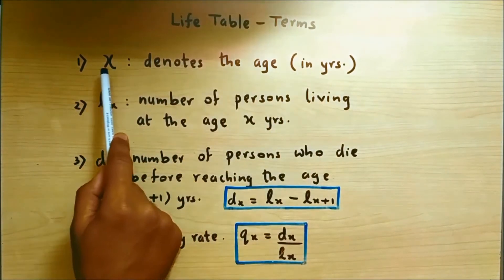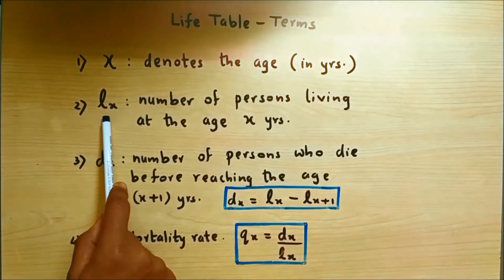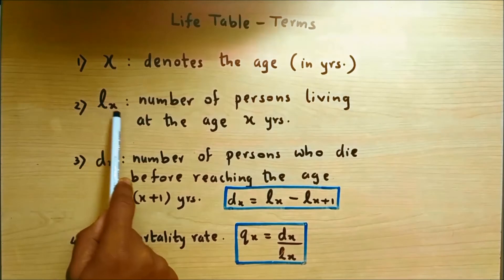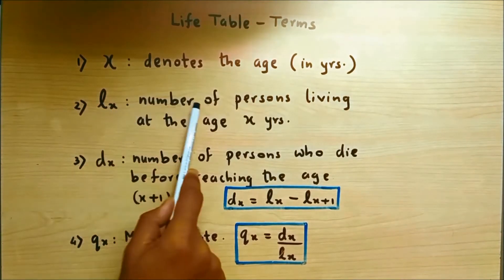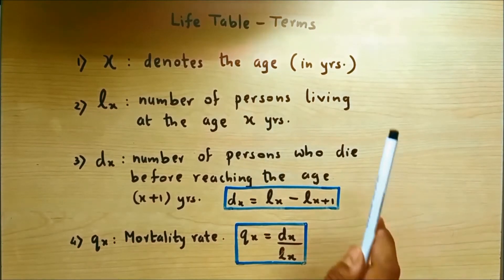The first column is X denoting the ages. The next column is LX. L is living at the age X years, so number of persons living at the age X years. When I say L20 equals 100, it means that there are 100 people of the age 20 years.